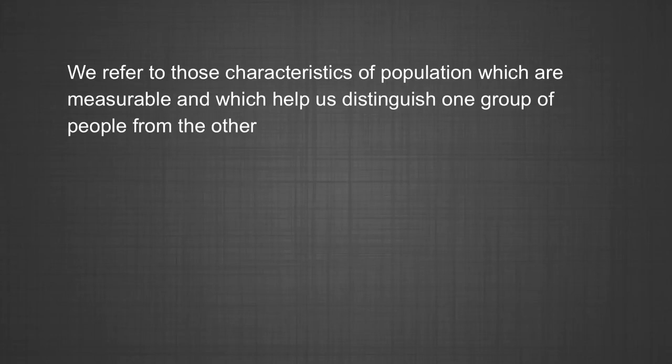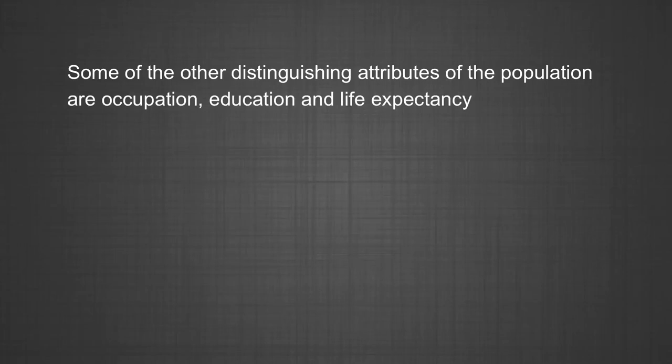Let us find out what population composition means. When we talk about population composition or the demographic structure, we refer to those characteristics of population which are measurable and which help us distinguish one group of people from the other. People can be distinguished by their age, sex, their place of residence. Some of the other distinguishing attributes are occupation, education and life expectancy. These components also help in setting future agenda for development of a region.